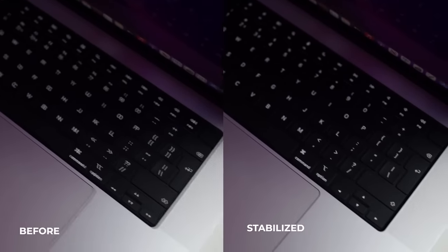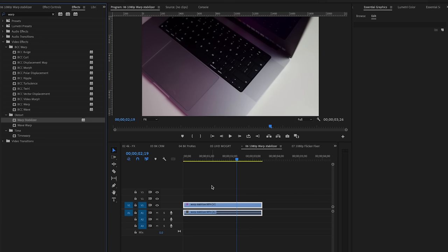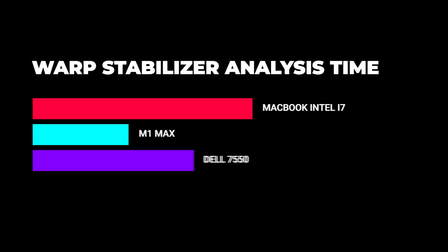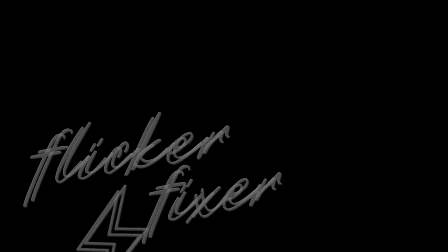The next test is warp stabilization. To apply warp stabilizer, go to Effects, search for 'warp,' and drag it onto your clip. It will analyze the footage and then stabilize it — the analysis time is what we're measuring. MacBook Pro 2017 took 7.78 seconds. The M1 Max took 3.8 seconds. The Dell took 6.6 seconds. The M1 Max is far superior for warp stabilizer. Now let's move on to the Flicker Fixer plugin.